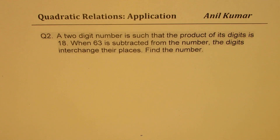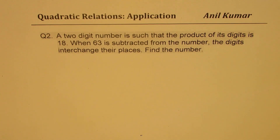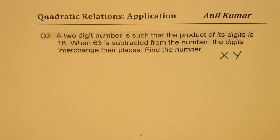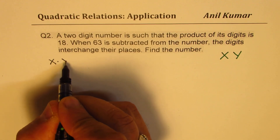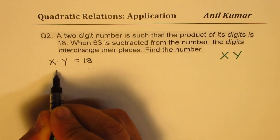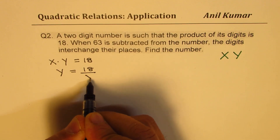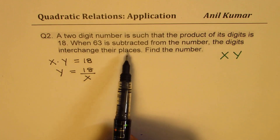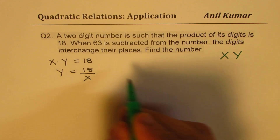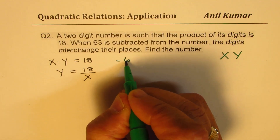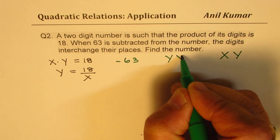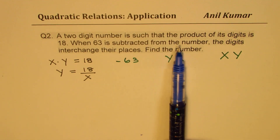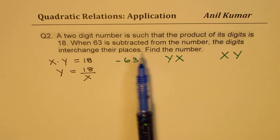Now let's move on to question number two. A two-digit number is such that the product of its digits is 18. Again, we take the number as xy, where x is the ten's digit and y is the one's digit. When we say the product is 18, that means x times y equals 18, so y equals 18 over x. When 63 is subtracted from the number, the digits interchange their places.